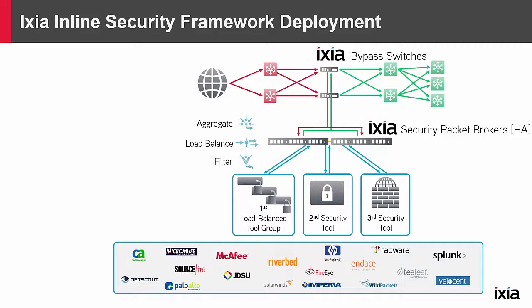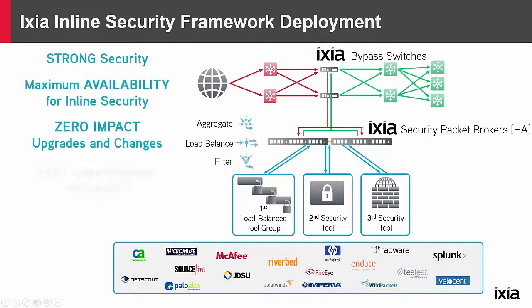Additionally, you can send other types of traffic through every security tool or bypass any as you decide. The policy is very easy to set up in this kind of environment. In addition to very strong security, you see maximum availability for inline security, as the availability goes way up here since you have much more control over when and how you do security upgrades.